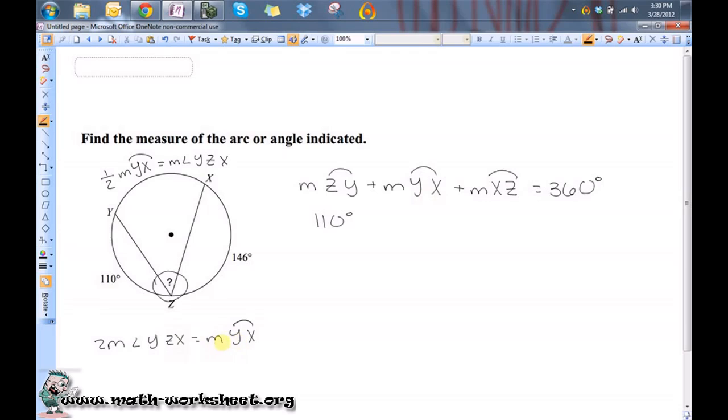I know that the measure of arc YZ is 2 times the measure of the angle YZX. So, let's actually substitute that in there. The measure of arc XZ is 146. It's equal to 360 degrees.